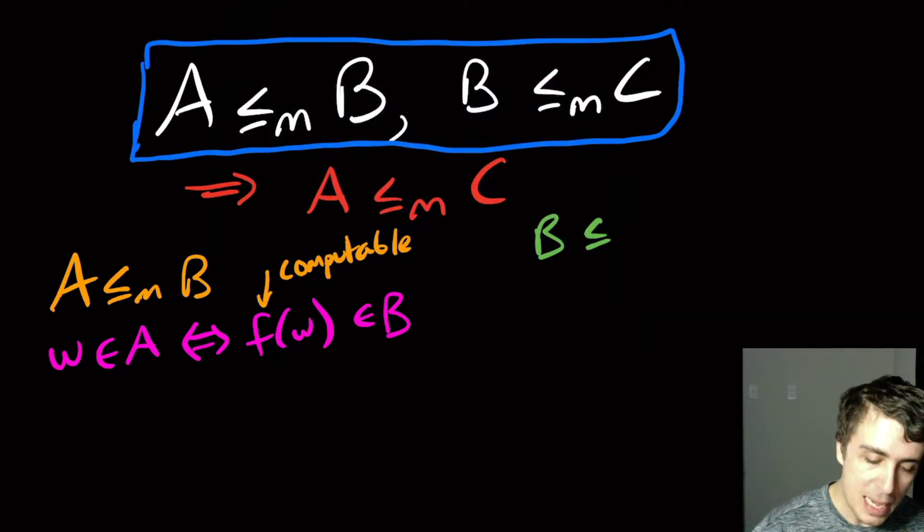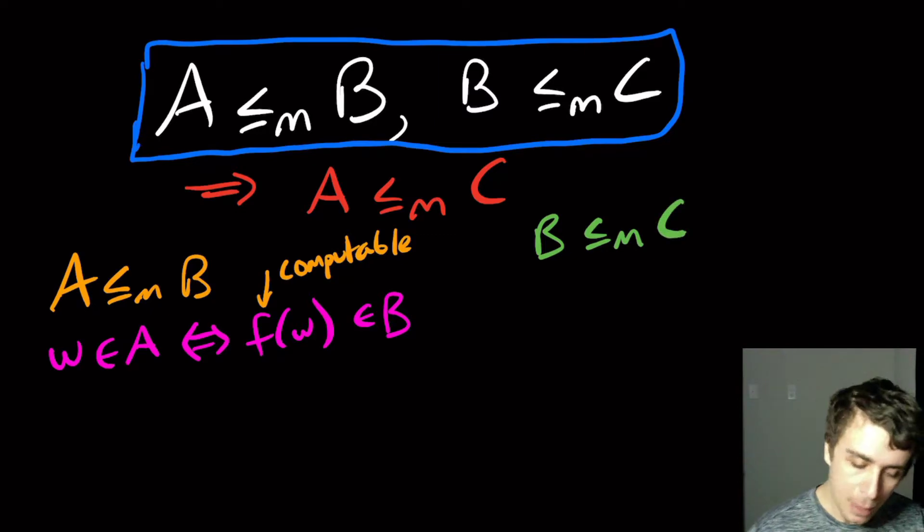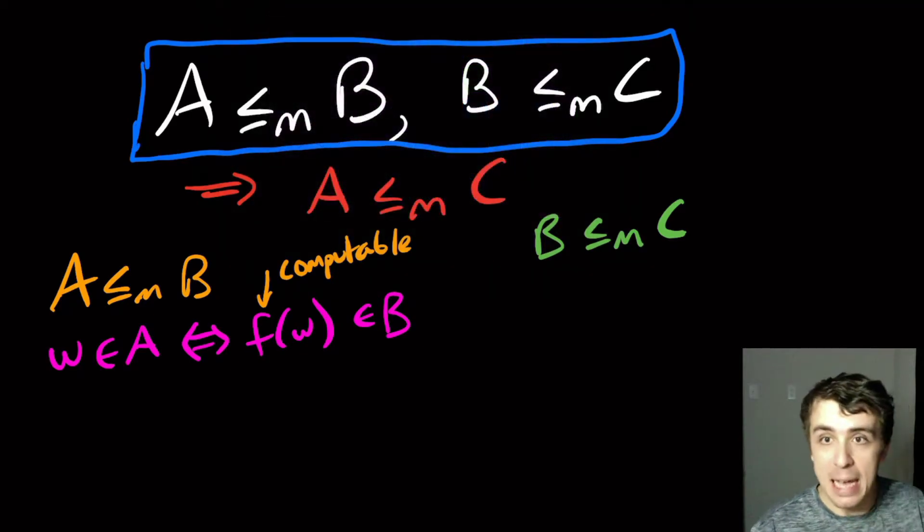And we also have that B mapping reduces to C. And there's some function G. It might be the same, it might be different than the F one, but it's some computable function too.